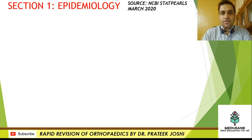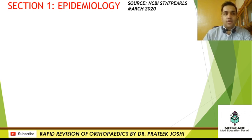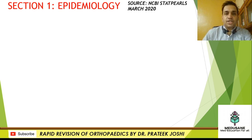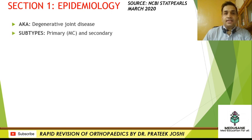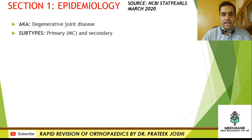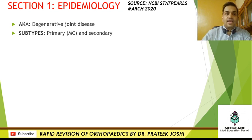This is the first section — Epidemiology of Osteoarthritis Knee. For all final year students and PG aspirants, this page is an MCQ gold mine sourced from NCBI StatPearls, updated as of March and April 2020. Osteoarthritis is also known as degenerative joint disease. There are two subtypes: primary osteoarthritis, which is not preceded by any trauma or systemic disorder, and secondary, which is either post-traumatic or follows a systemic disorder. The most common overall subtype is primary, and amongst secondary osteoarthritis the most common subtype is post-traumatic.